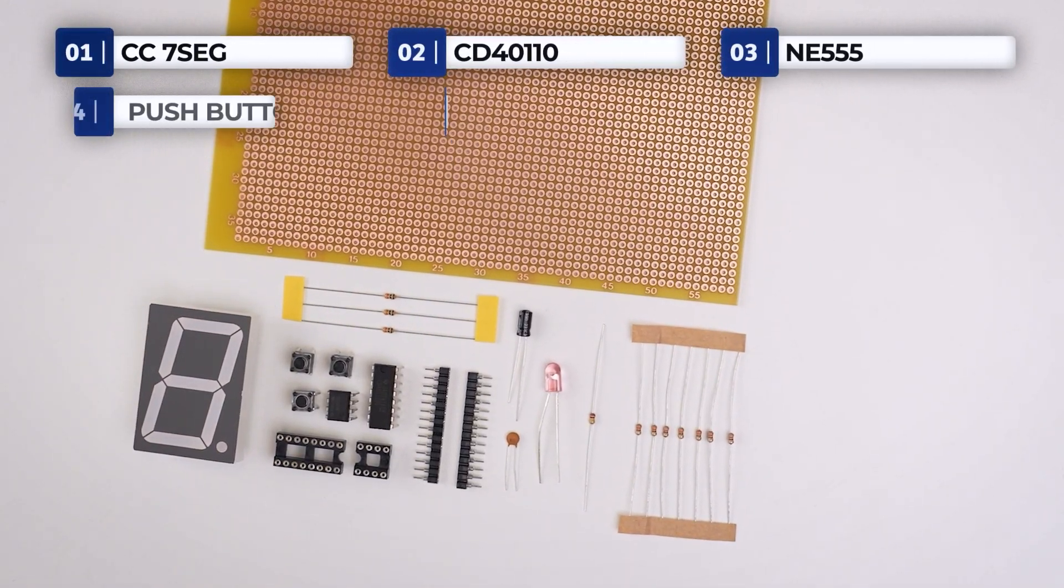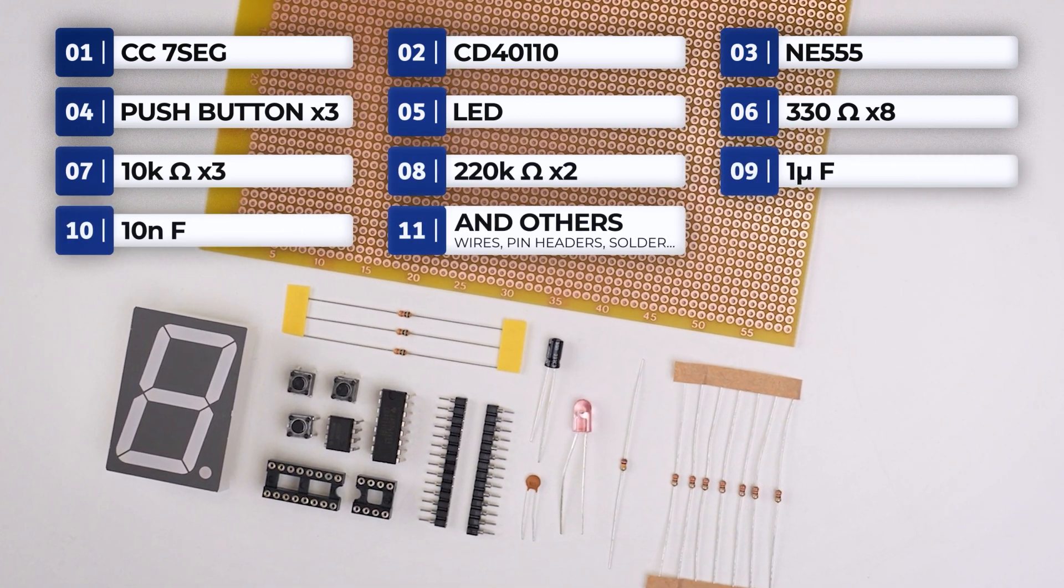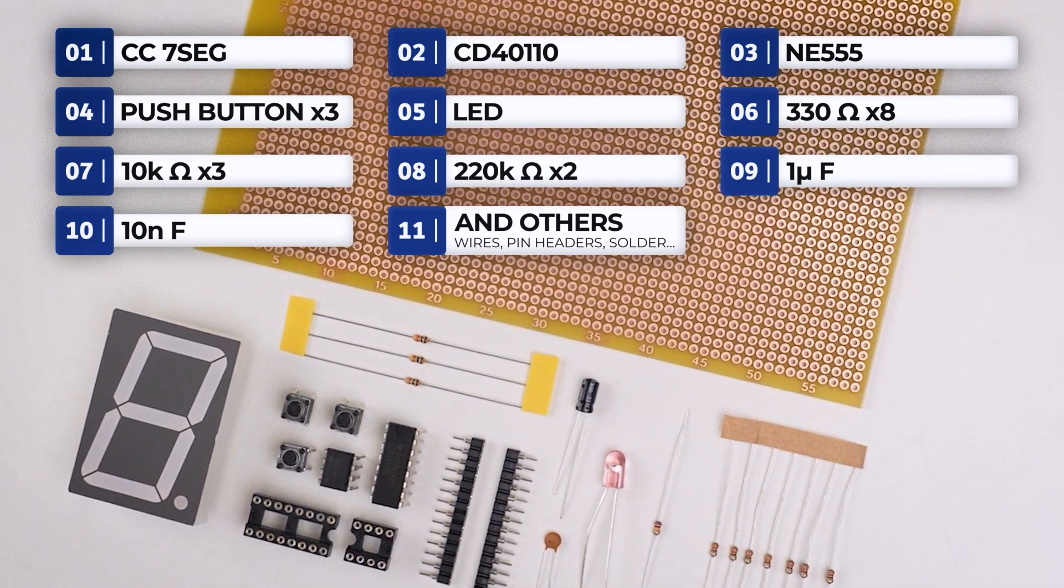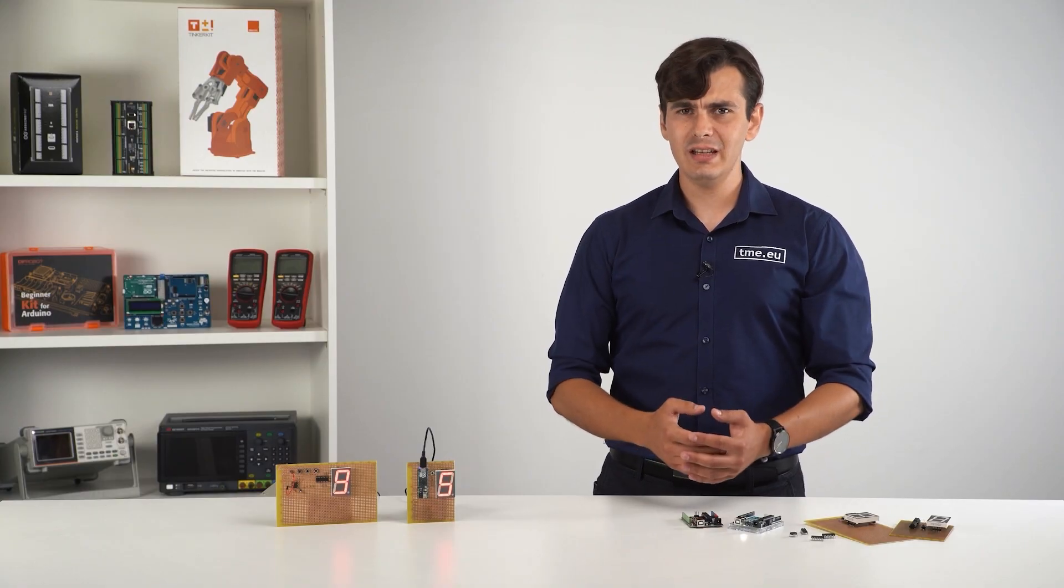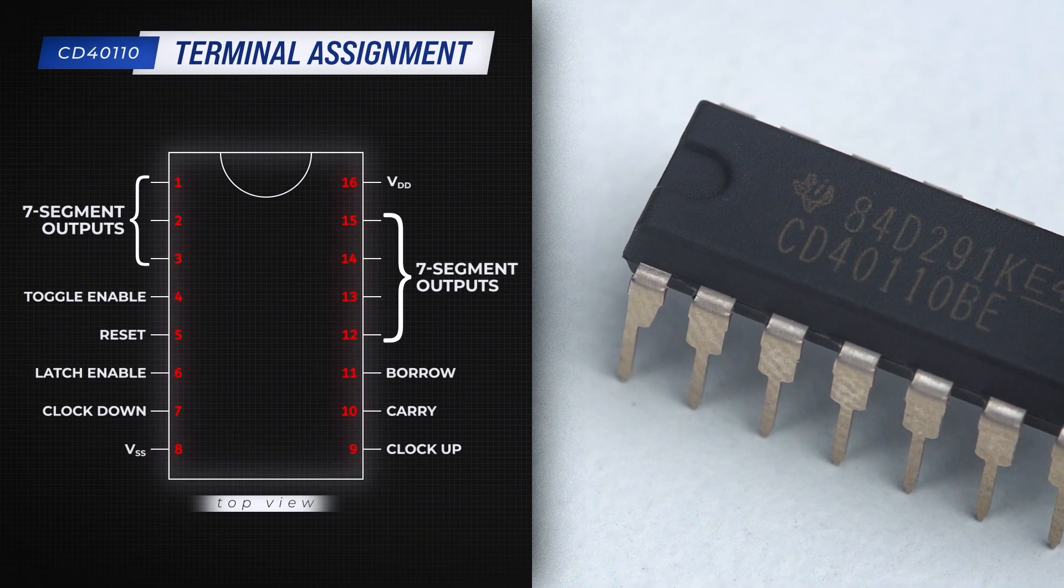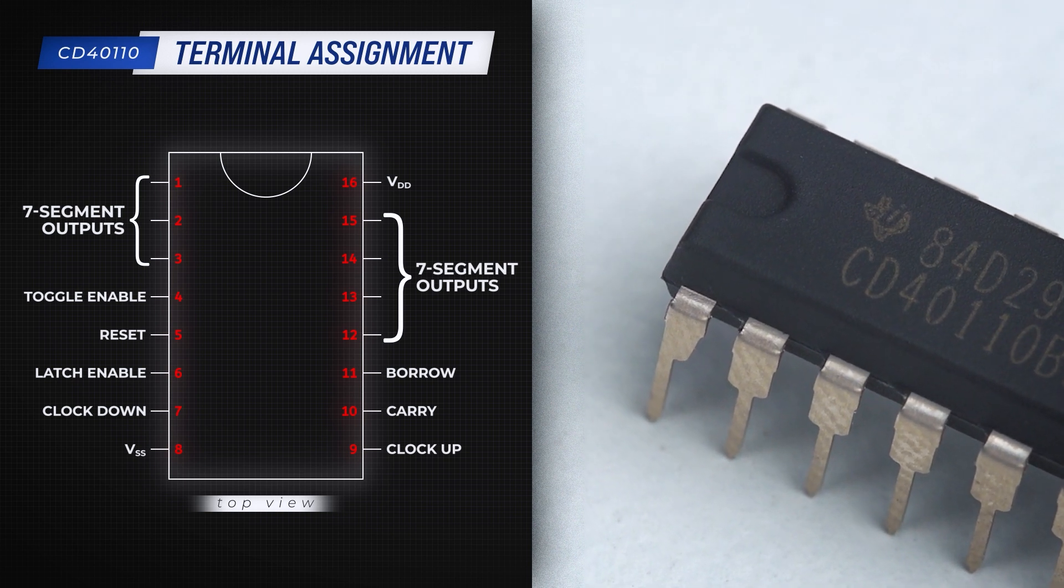A CD40110, an up-down counter integrated circuit, a common cathode display, various resistors and capacitors, switches and a 555 timer. The new CD40110 counter adds more capabilities, like a new push button for counting down and also extra push button for count reset.